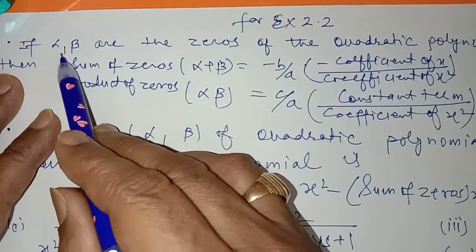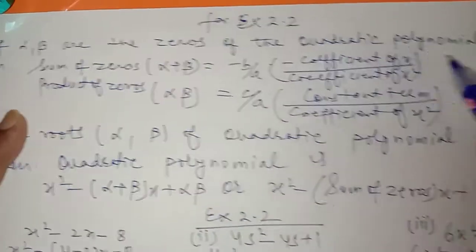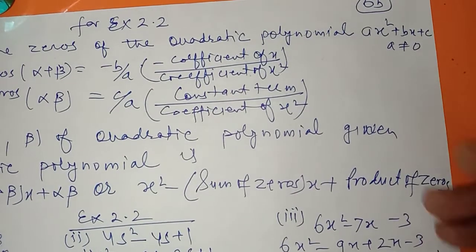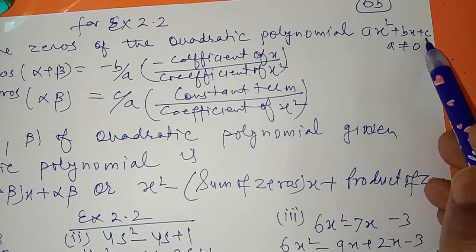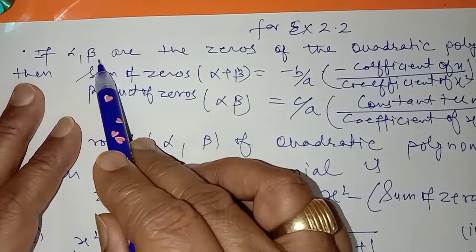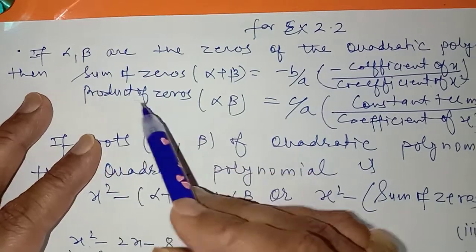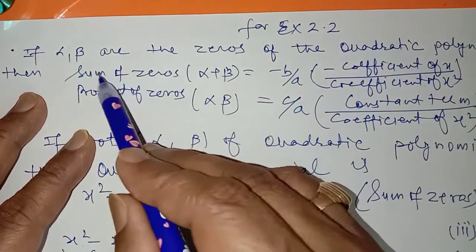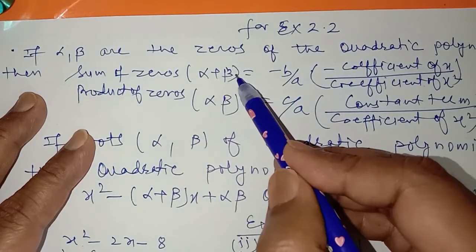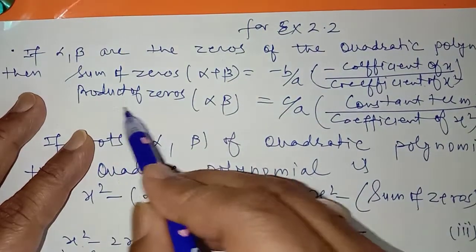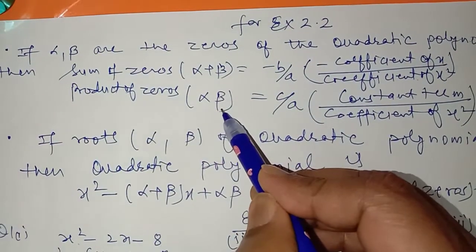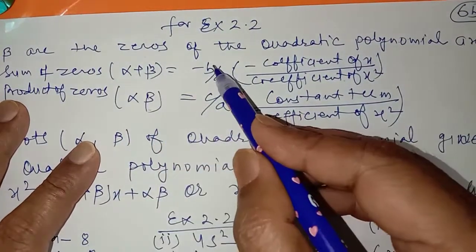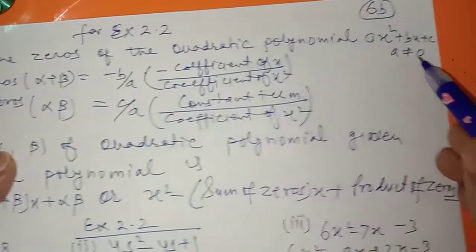We call the roots of the quadratic polynomial alpha and beta. Then there is a relationship between the sum of the zeros and the product of the zeros. Sum of the zeros means alpha plus beta. Product of the zeros means alpha into beta. The sum of the zeros will be equal to minus b upon a.